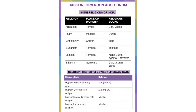Religions of India: Hinduism has the place of worship as Temple, and religious books are Gita and Vedas. Islam has place of worship as Mosque, and the religious book is the Quran. Christianity has place of worship as Church, and the religious book is the Bible. Buddhism has place of worship as Temple, and the religious book is the Tipitaka. Jainism has place of worship as Temple, and the books are Kalpasutra, Agama, and Tattvartha. Sikhism has place of worship as Gurdwara, and the religious book is Guru Granth Sahib.